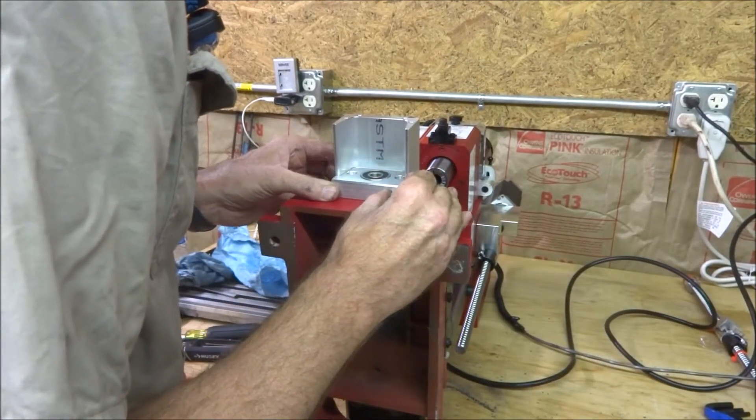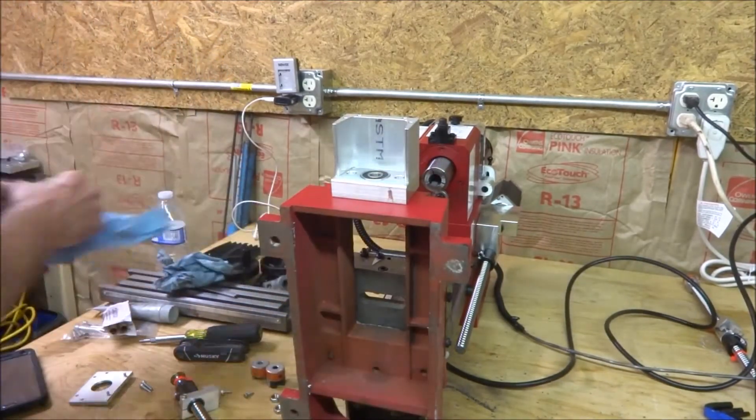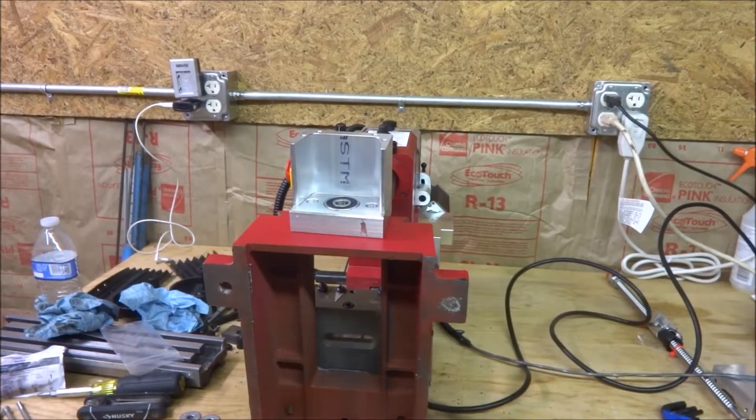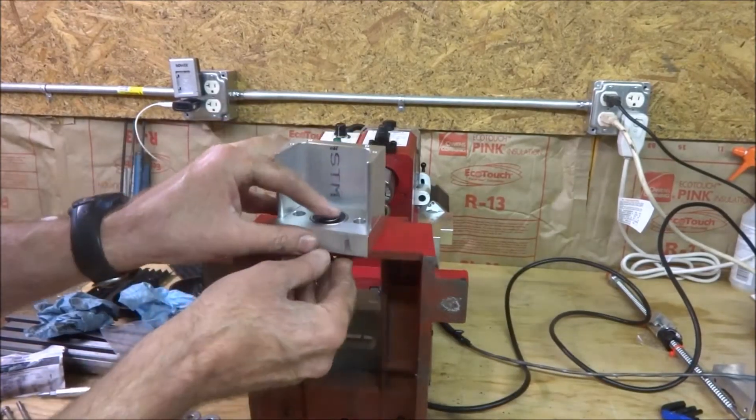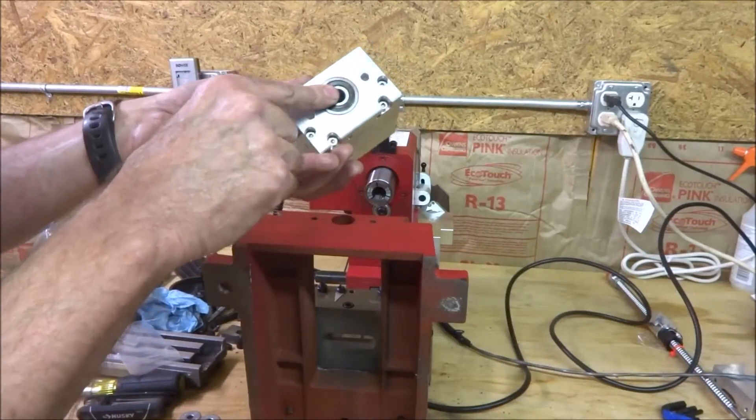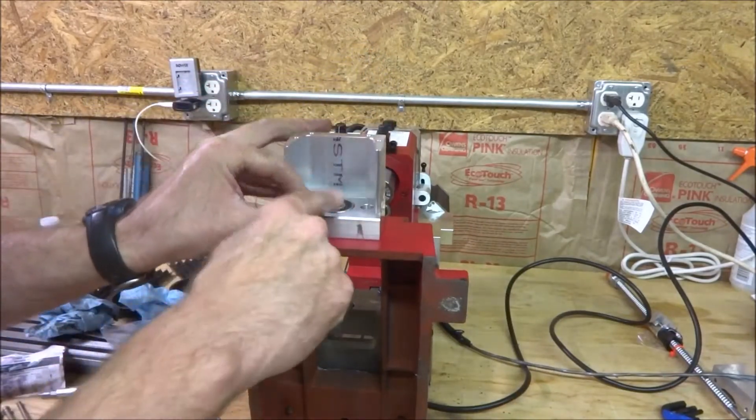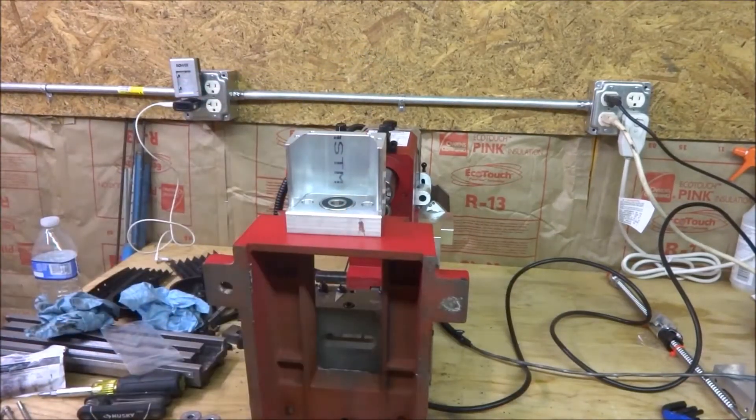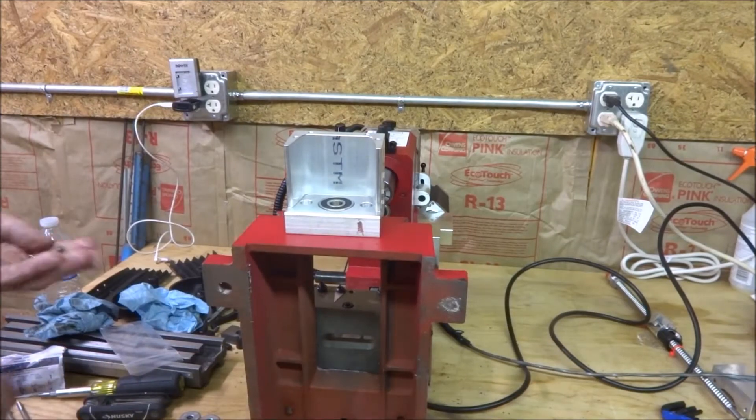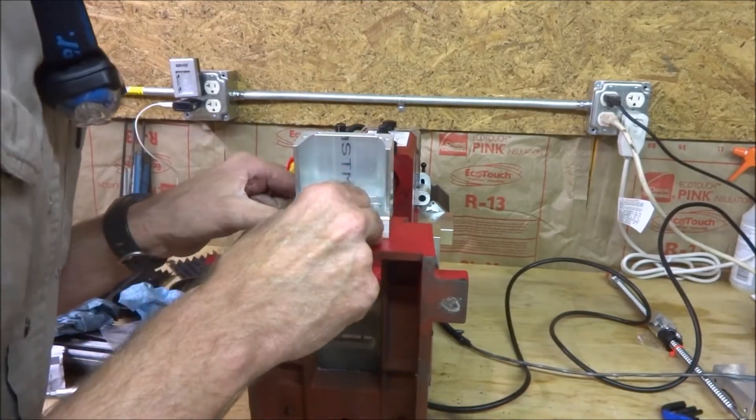I think I was supposed to keep some screws for that. It looks like they gave us some screws for this. Make sure that the bearing is still there. There's two of them, one on the top and one on the bottom. And then I'm just gonna take two screws out of the kit.